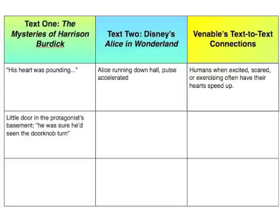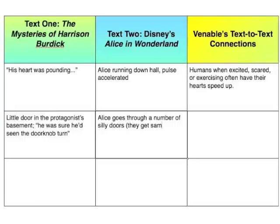That's our connection. So here we have two people and their hearts are accelerated for different reasons. In our second connection, we have our little doorknob and the doorknob is turning. As we saw, Alice goes through a number of silly doors. There are multiple doors — one doorknob and the others — and they get smaller and smaller as she goes. And when turning a specific doorknob, he talks back.